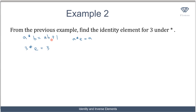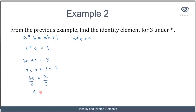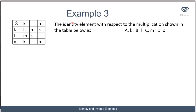So I write this out using the formula given. I know that a★b equals ab plus one, so 3★e equals 3e plus one, which equals 3. Therefore 3e equals 3 minus 1, which equals 2. Dividing both sides by 3, I have my identity element equal to 2 over 3.